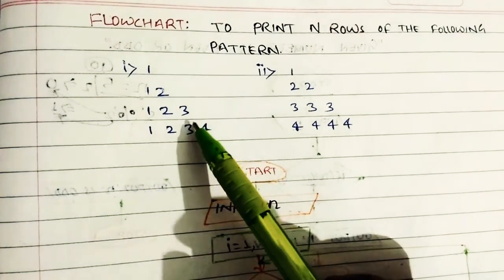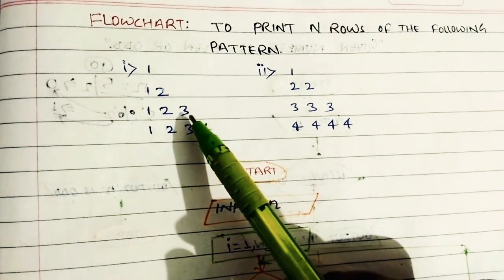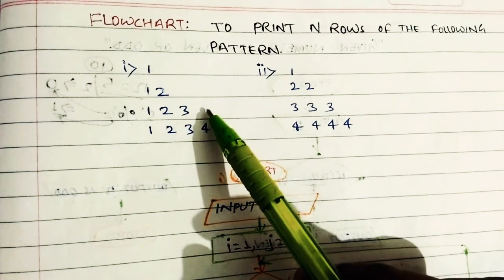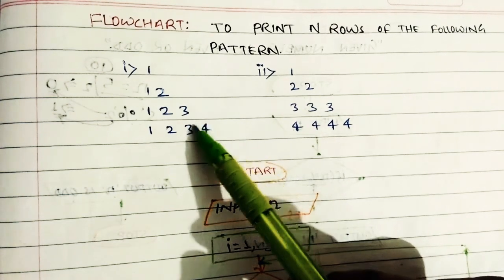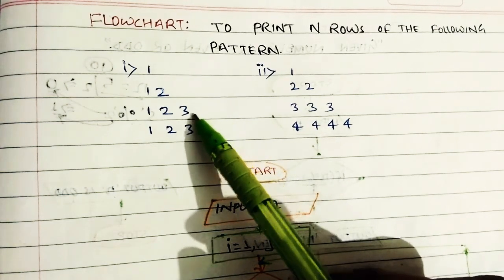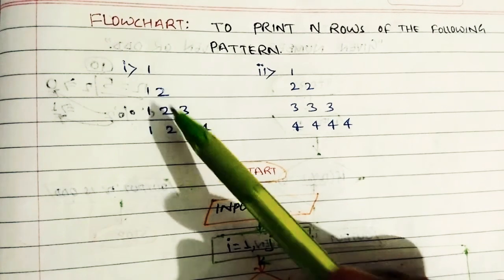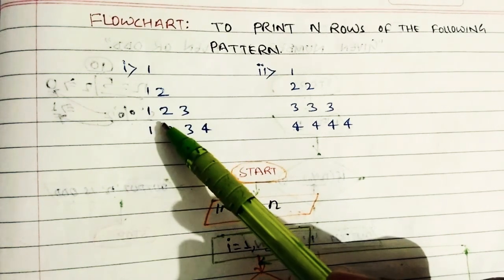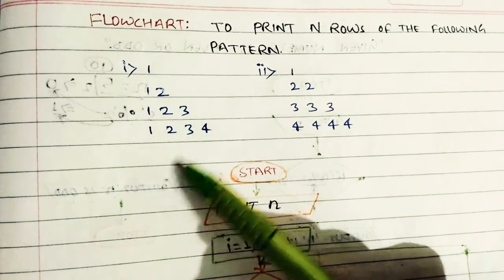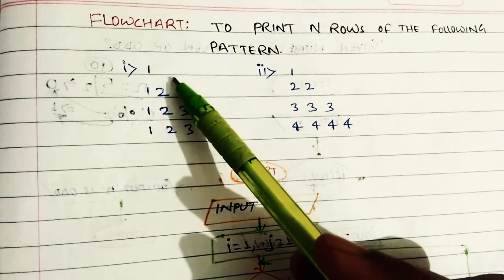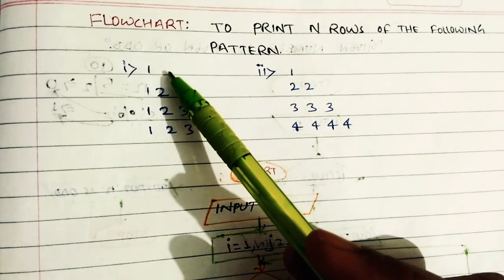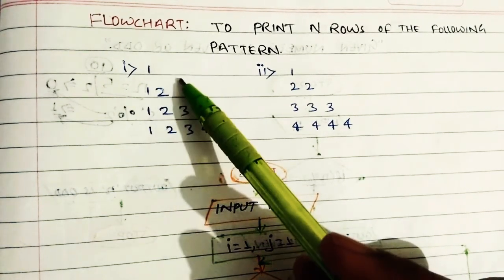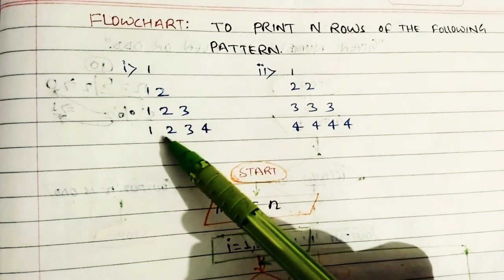Now, we will have two different variables: I and J. Suppose I starts at 1, and J also starts at 1. How do we check the number of rows? We will have one variable. If the number of rows is 4, then the value of N is 4.